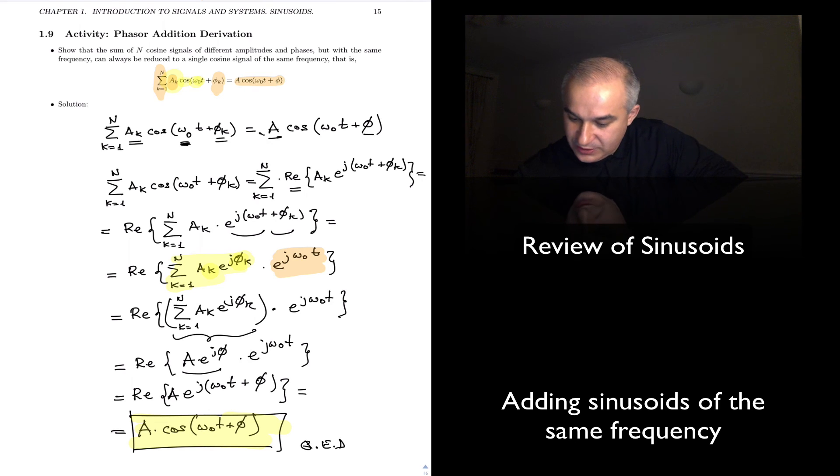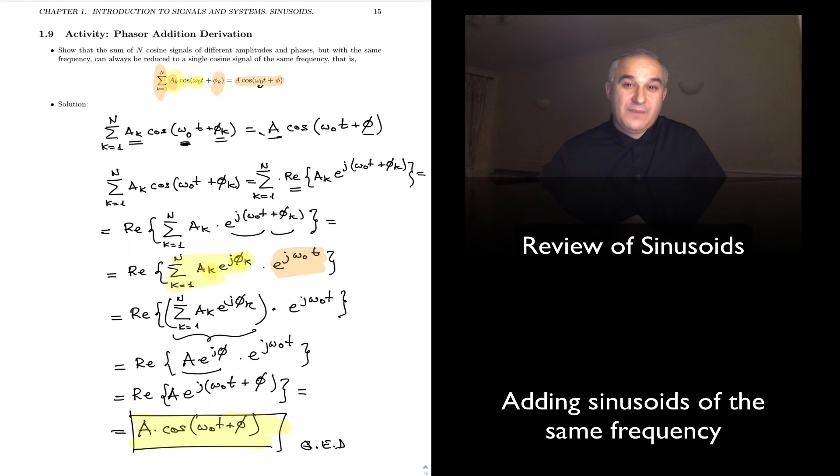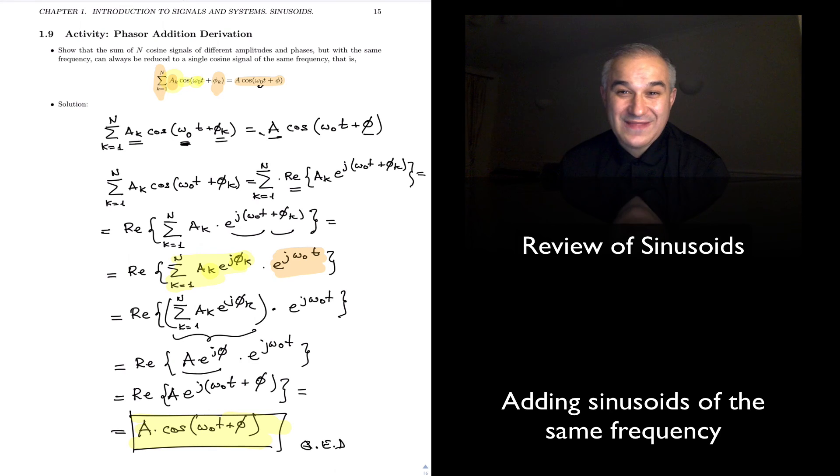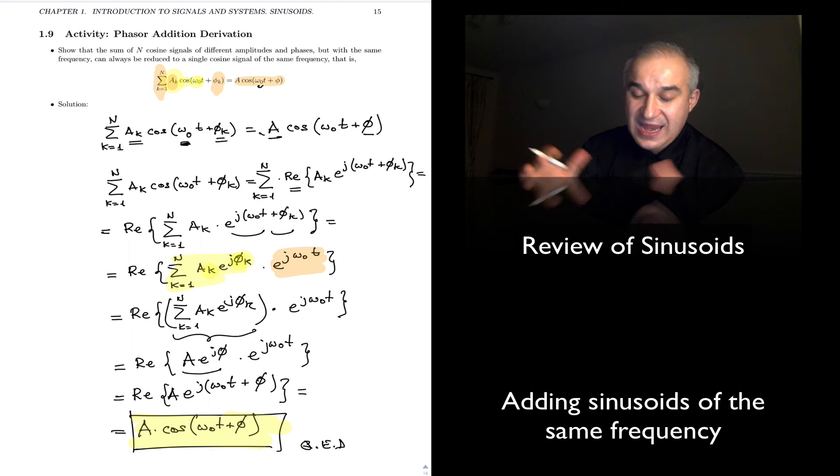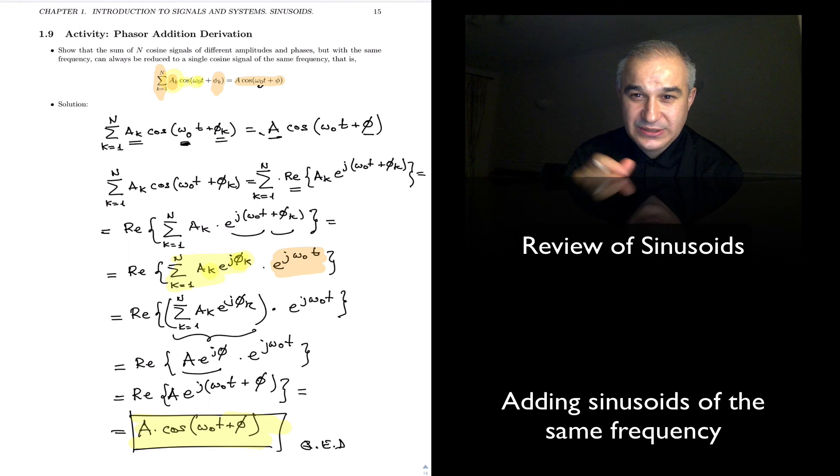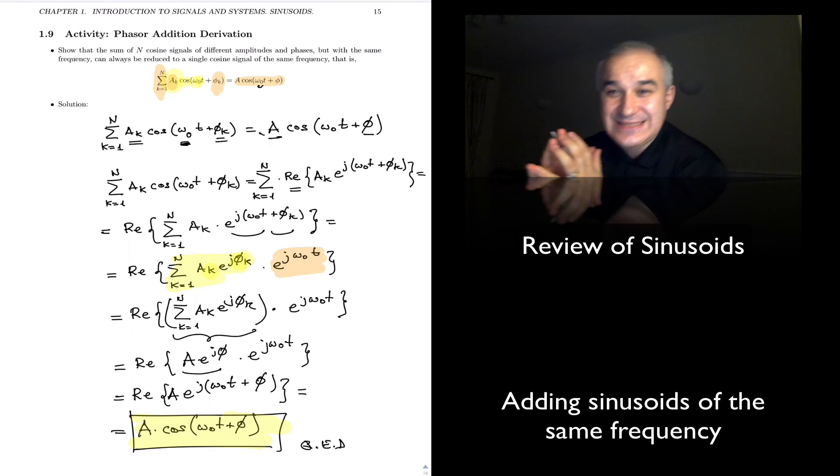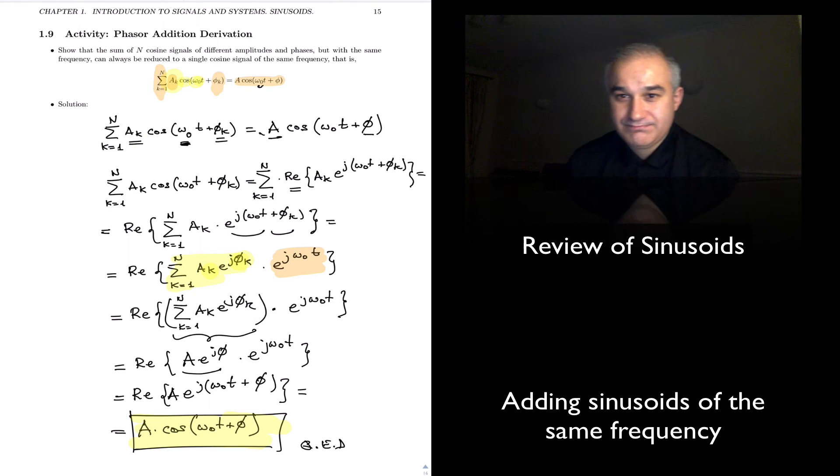What we get is a simple, meaning a single sinusoid, that has the same frequency, and then a particular amplitude and a phase. that the sum of n, or any number, of sinusoidal signals with the same frequency results in a simple sinusoid, a cosine, with a given amplitude and a phase.